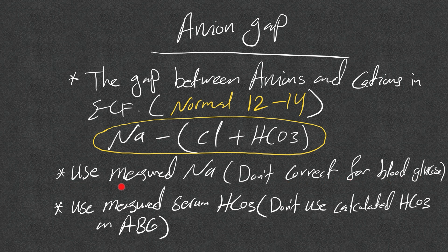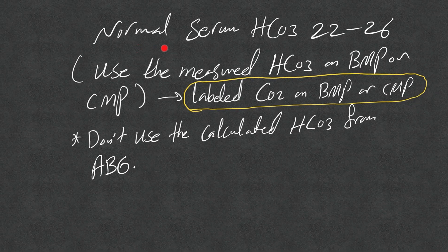Use the measured one from BMP or CMP. Also use the measured serum bicarb level from BMP or CMP — do not use the calculated one from ABG. Normal serum bicarb is 22 to 26. On BMP or CMP it is usually labeled as CO2.